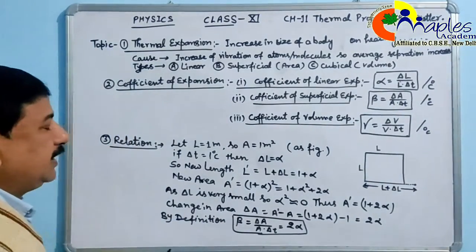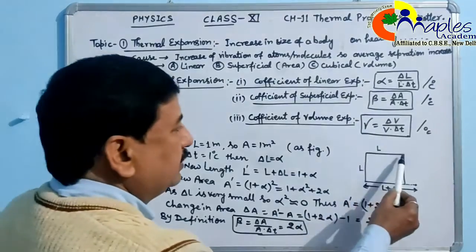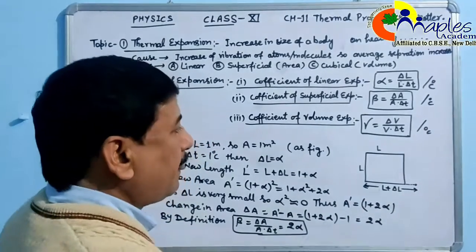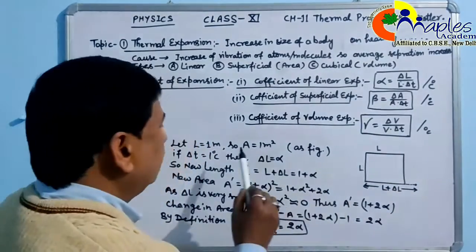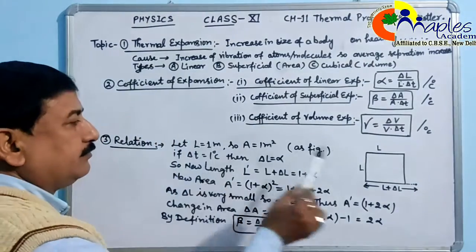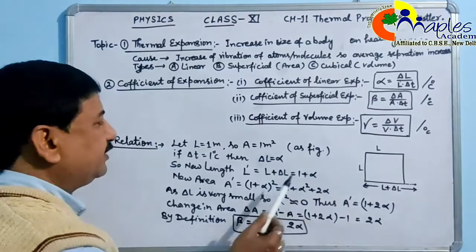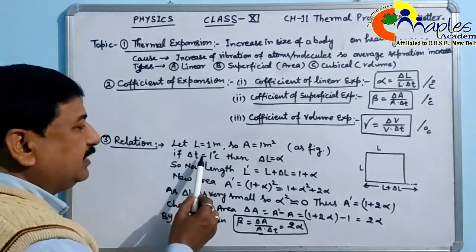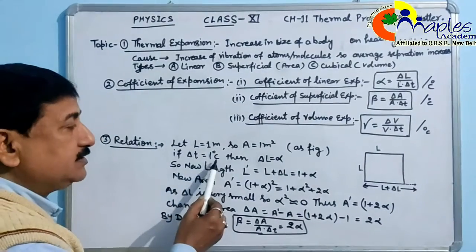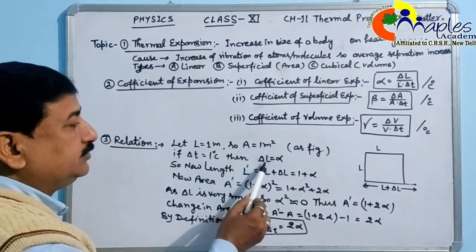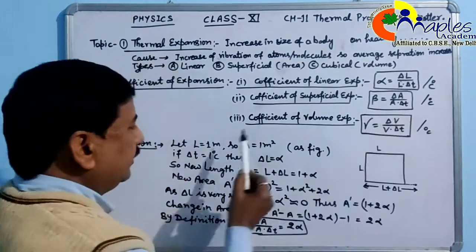Now, what is the relation between these coefficients? Suppose we have a square laminar with side length L. The original area is A = L². If temperature increases by delta T = 1 degree, and we put L = 1 meter, then we can derive the relationship.